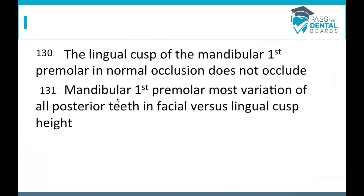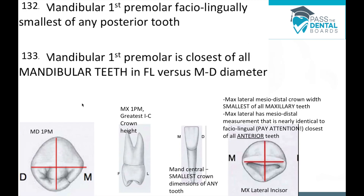For the upper arch, the lingual cusp is maybe about one millimeter lower than the buccal cusp, and on the second premolar those cusps are about the same height. On the mandibular first premolar, the cusp height is not as cut and dry — there's variation. Faciolingually, the mandibular first premolar is the smallest of any posterior tooth, which is very different from the maxillary first premolar, which is the biggest of all premolars.